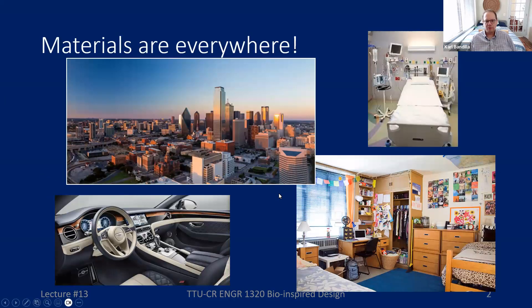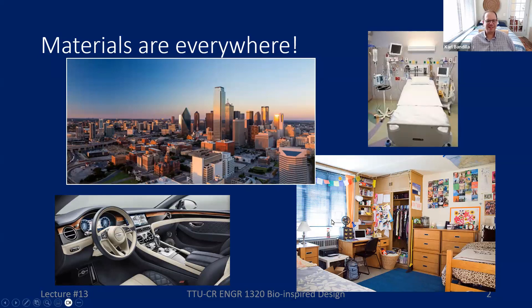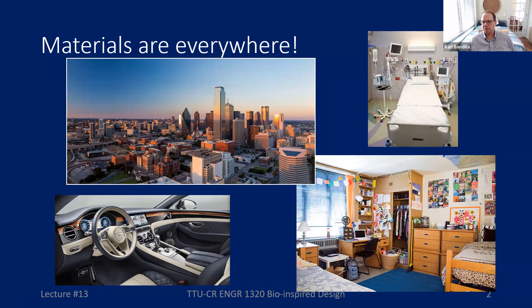Materials are all around us — everything around us is made out of something, by definition. It doesn't matter if it's the interior of a car, an entire city, a hospital room, or a dorm room. Even a small place like a university dorm room is filled with all kinds of different materials: some kind of wood, a rug on the floor made of some fabric, tile probably made out of PVC, a computer with all its components, window shades made probably out of metal, glass, fabric on the bed — tons of it.